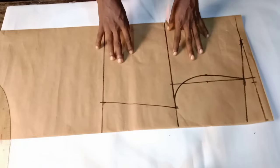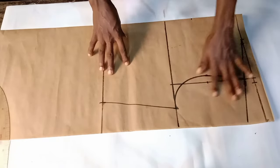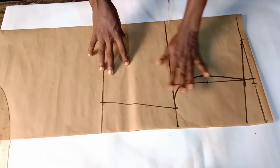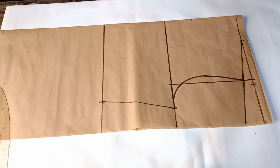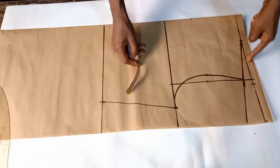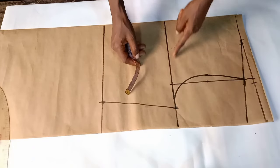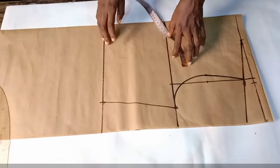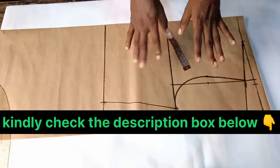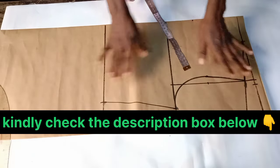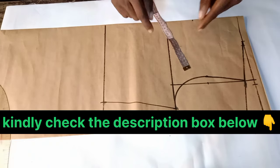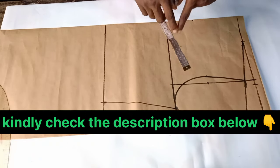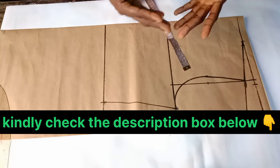Now I've drafted my basic bodice pattern right here, so I have all my measurements. This is my starting line, this is my armhole line, while this is the under bust line. I have a detailed video on how to draft the basic bodice pattern which I'll put the link in the description box below, kindly check it out.